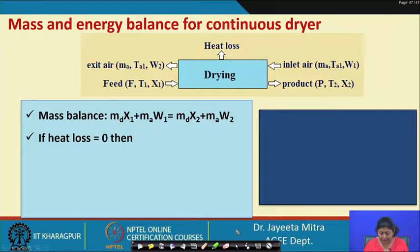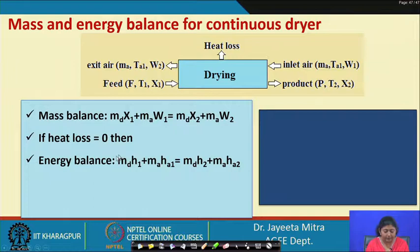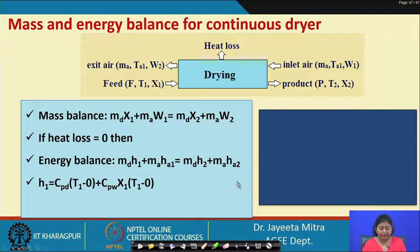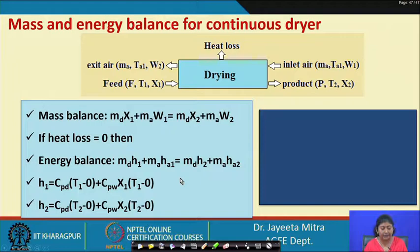If there is no heat loss, the energy balance states: enthalpy of inlet feed + enthalpy of inlet air = enthalpy of dried product + enthalpy of exit air. Using the psychrometric chart, we can calculate enthalpy of the air stream if two properties — temperature and specific humidity — are known. H₁ and H₂ represent the enthalpies of feed and product respectively.